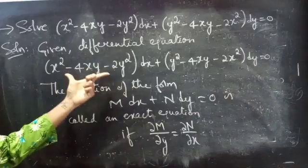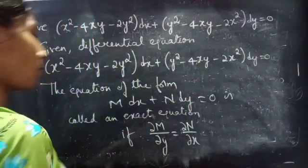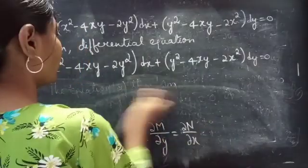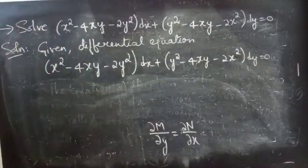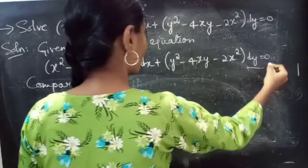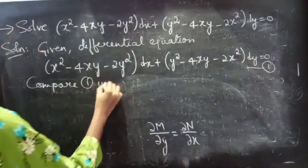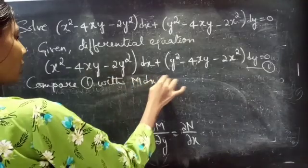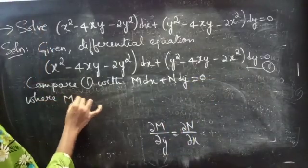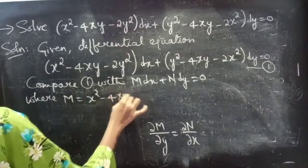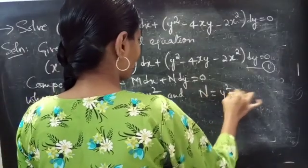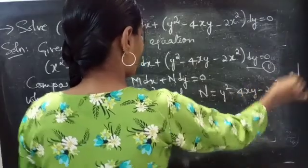The given equation is of M dx plus N dy form. Comparing with M dx plus N dy equals to 0, where M equals to x squared minus 4xy minus 2y squared, and N equals to y squared minus 4xy minus 2x squared.